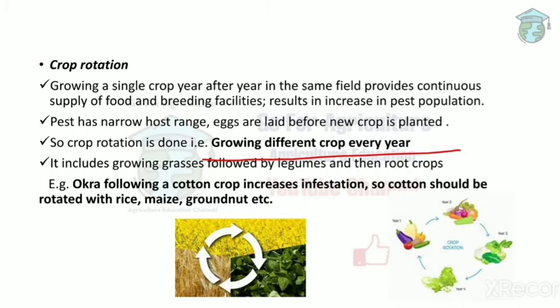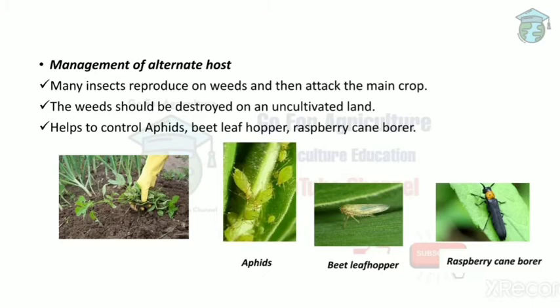Examples of crop rotation: if okra follows a cotton crop, it increases pest infestation. Cotton should instead be followed with rice, maize, or groundnut — in these combinations, pest infestation is very low. This is the use of crop rotation: growing different crops every year.